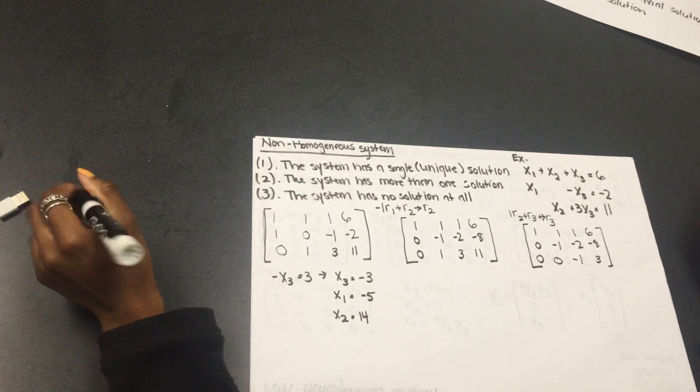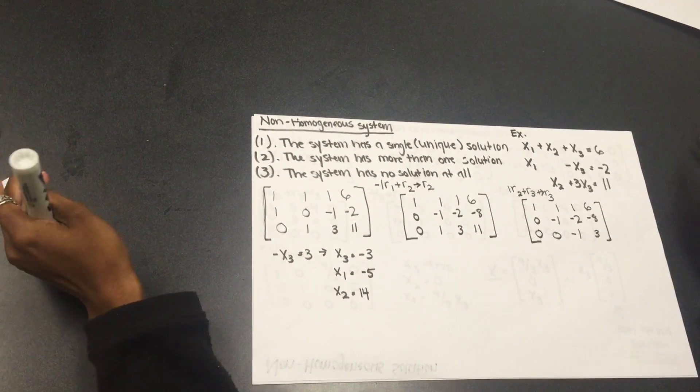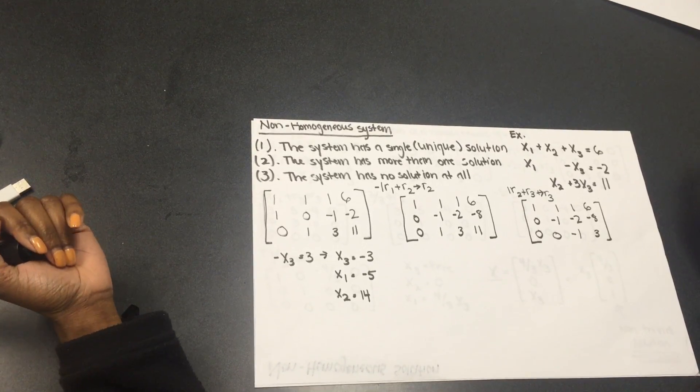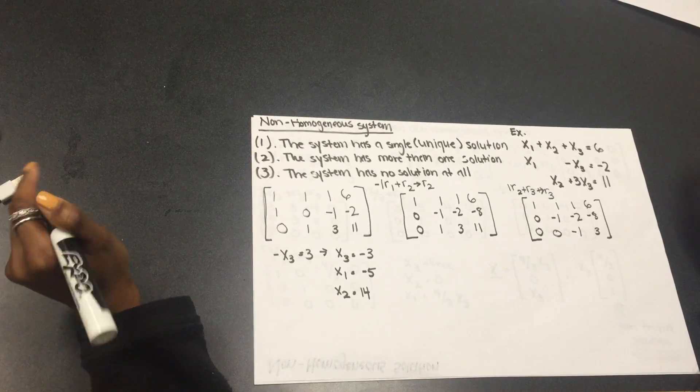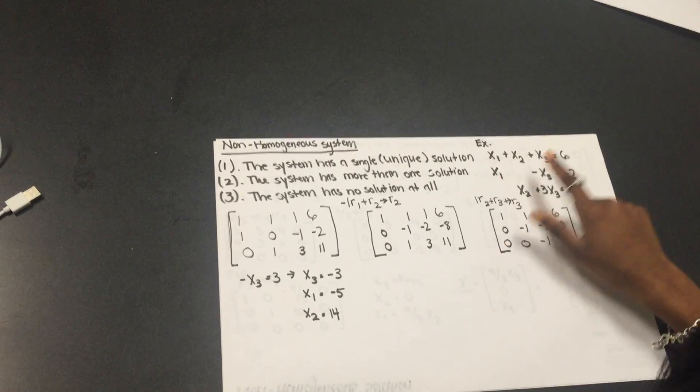So, next, we will talk about a non-homogeneous system. A non-homogeneous system is a system that has a single unique solution, a system that has more than one solution, or a system that has no solution at all. So, the example we use here is this system right here.